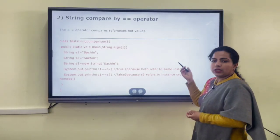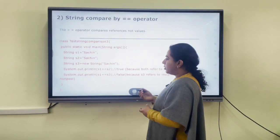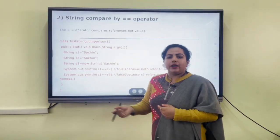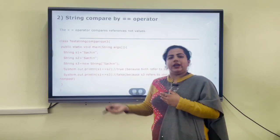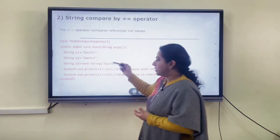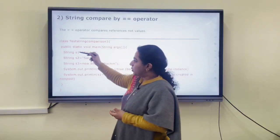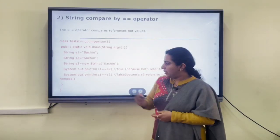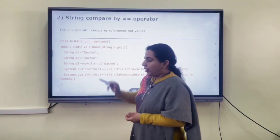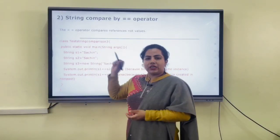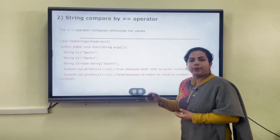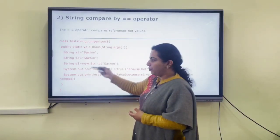Next is using the double equals-to (==) operator. It will return true if both values are the same and were created using string literals. But if one string is created using a literal and the other using the new operator, it will return false. For example, s1 and s2 are created using string literals and s3 using the new operator — all three have the value "Sachin". Comparing s1 and s2 returns true, but comparing s1 with s3 returns false, because the method of creation is different.